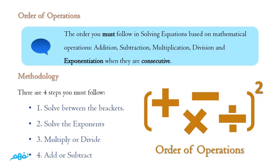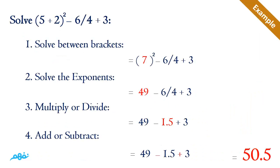The first example is: solve (5 + 2)² − 6/4 + 3. Without brackets, the exponent would only apply to 2 or 5 alone, giving a different value. But with the brackets, the exponent applies to the sum of 5 plus 2. So the first step is to solve inside the brackets: 5 + 2 = 7.